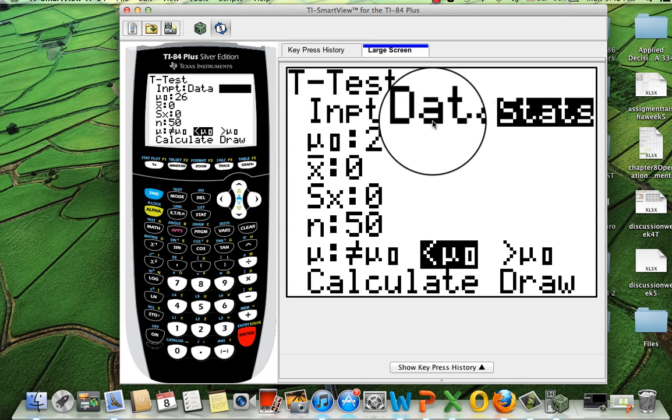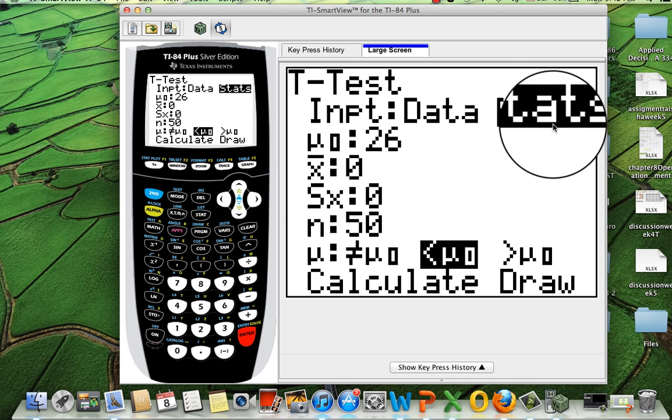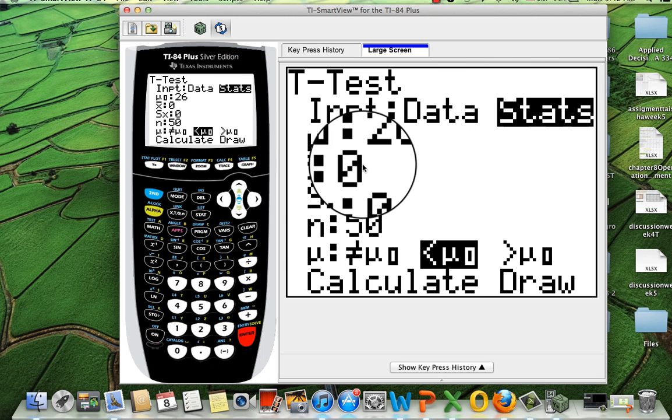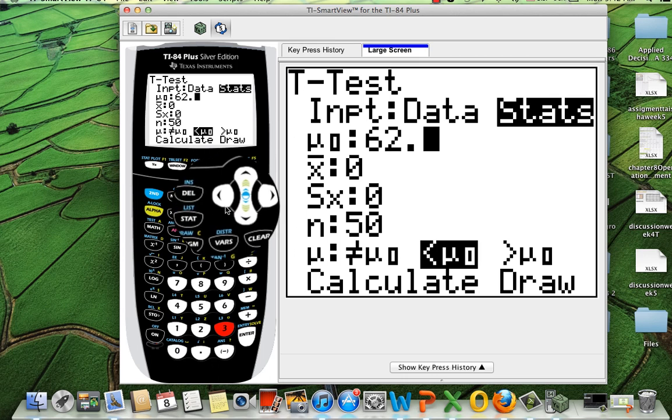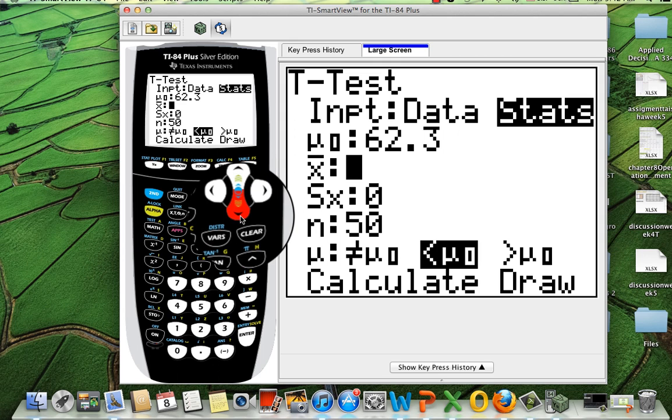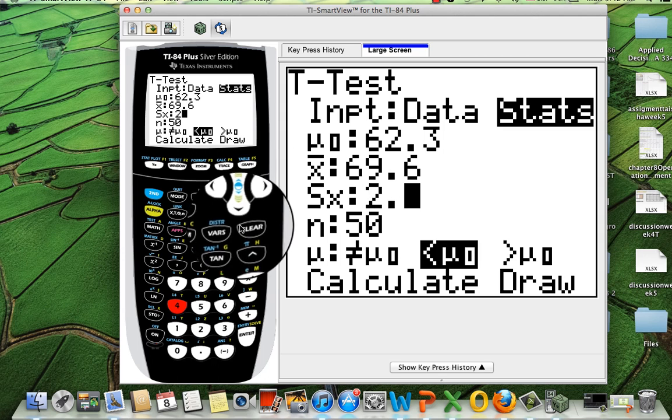And see, you're gonna have data and a stat. Data is used when you have a list, that means that they give you a bunch of data and then you grab that list from the calculator. In this case, we don't have that. So we're gonna use the function stats because we have already all our data. So the mu was 62.3. My x-bar was 69.6. My s is 2.4. And my n equals 12.